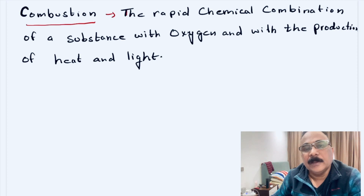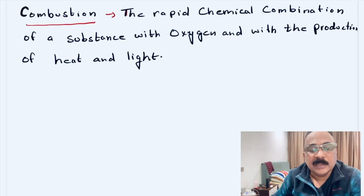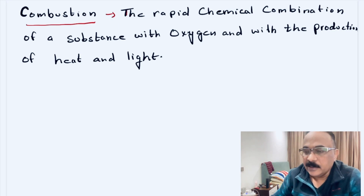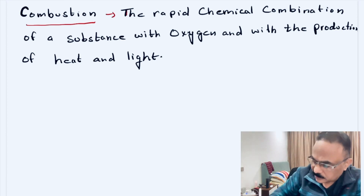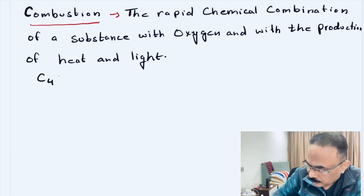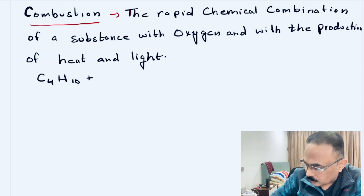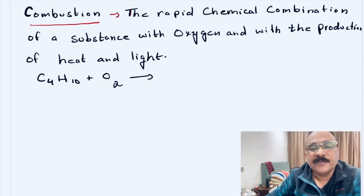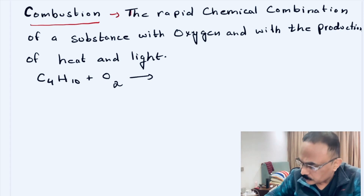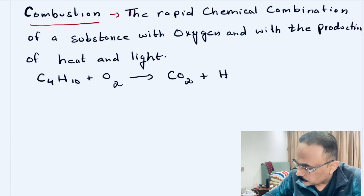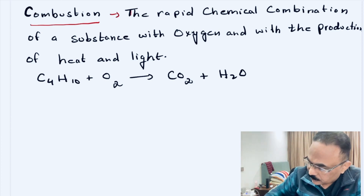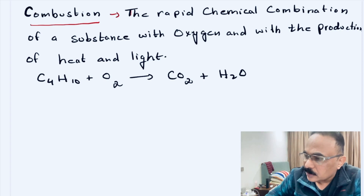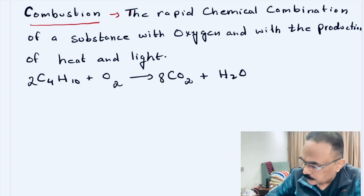Let us take an example of butane. When we talk about butane and combustion reaction, we will first consider a good supply of oxygen, and in the second case, an insufficient supply of oxygen or air. So let us write down the equation with a good supply of oxygen. Butane is C4H10, and we react it with oxygen. With sufficient supply of air or oxygen, it will always give you carbon dioxide and water — CO2 plus H2O. Let us balance it: if we take 2 butane, then we need 13 O2, giving 8 CO2.